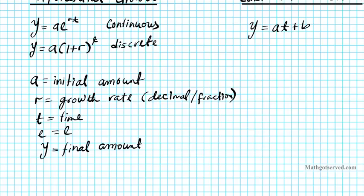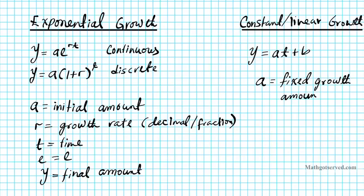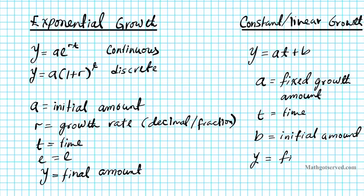Now let's take a look at the linear growth situation. If you have linear or constant growth, a is the fixed growth amount. Since it's constant, the growth amount is going to be fixed — also known as a slope. Then t is the time, and b is the initial amount that you started with. And y basically yields the final amount.